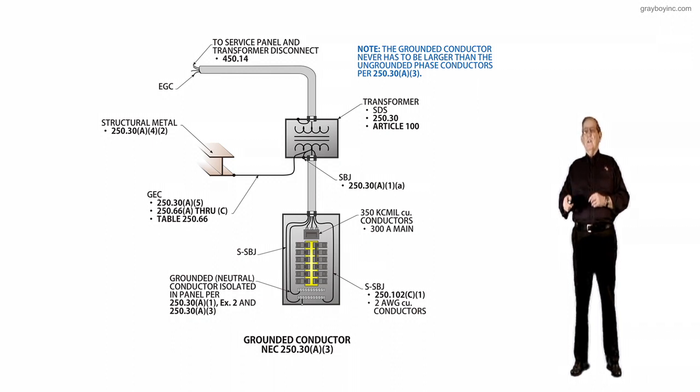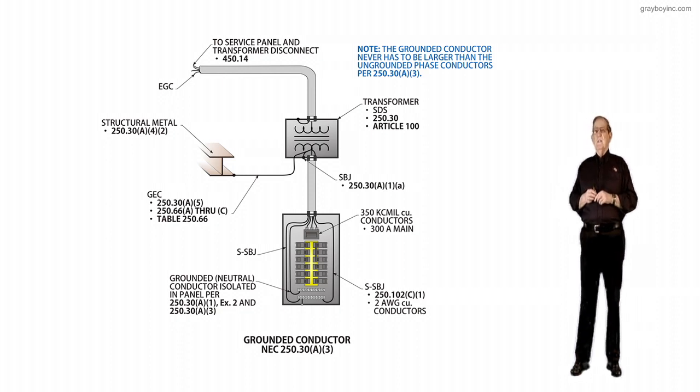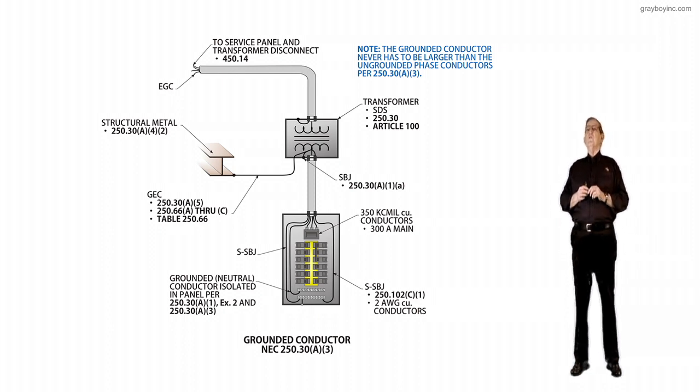The neutral or grounded conductor has to be at least number 2. But if it's a neutral, then remember you've got to go to 220.61, calculate the neutral load, and take the larger of the two. That's very important. And then, if you're connecting it to the structural steel, for example, in the transformer, then it would be number 2. The separately bonding jumper there for the separately derived system would be number 2 also. So up to 1,100 KC mil, if the neutral isn't required to be larger by 220.61, then we know everything in that panel board has to be at least number 2, with the neutral possibility being larger because of the neutral current.